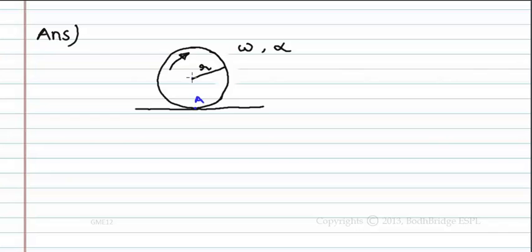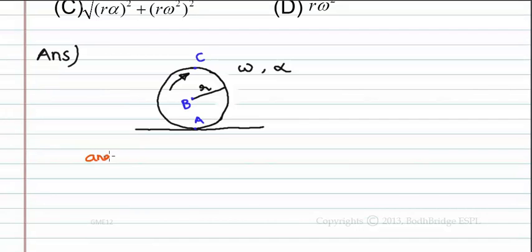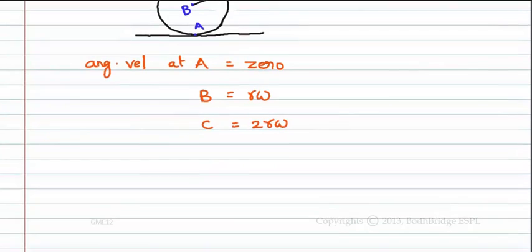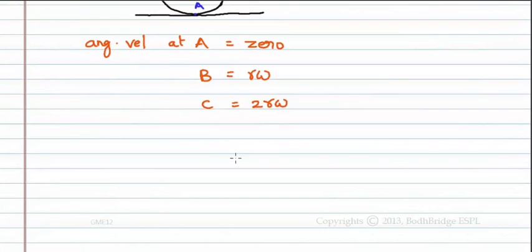In this case, angular velocity at point A, where the disk is in contact with the base, is equal to 0. At point B, at the center of the disk, it is R omega. And at point C, the topmost point, it is equal to 2 R omega.